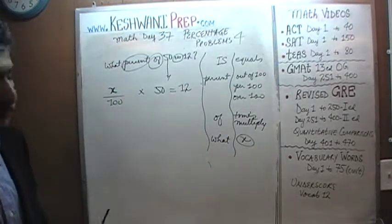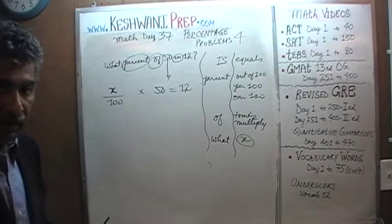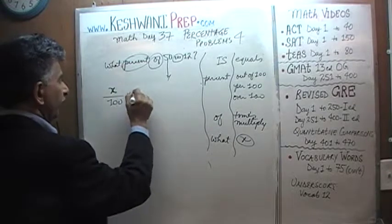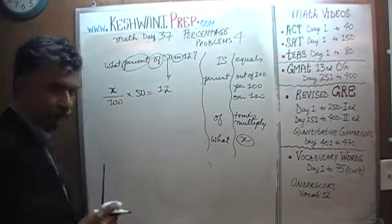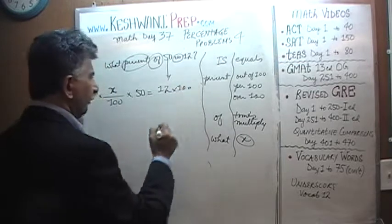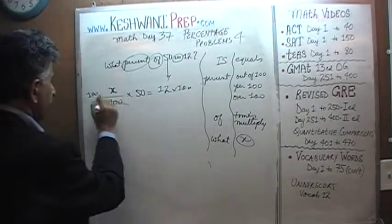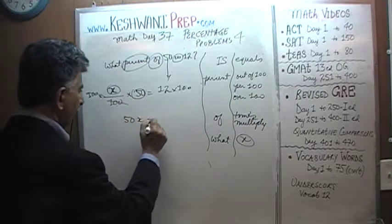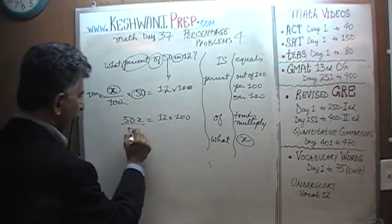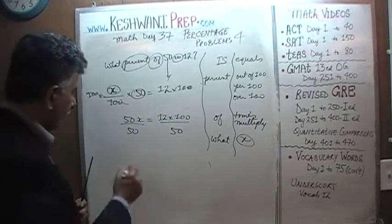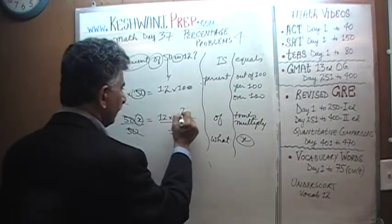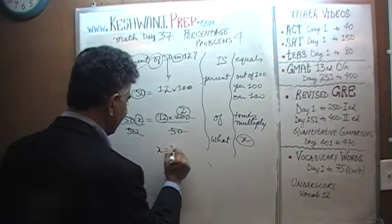What percent of 50 is 12. Let's multiply both sides of the equation by 100 to get rid of the 100 on the bottom. Now we have 50x equals 12 times 100. Let's divide both sides by 50 — that drops out the 50 and we're left with x by itself. 100 divided by 50 is 2, so it's 2 times 12, which is 24. x equals 24.